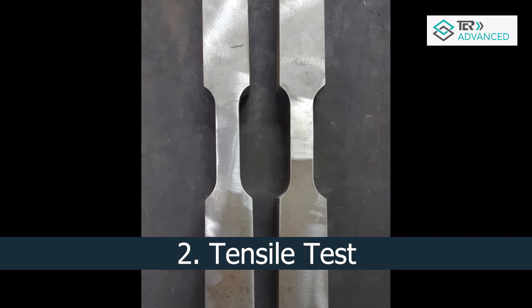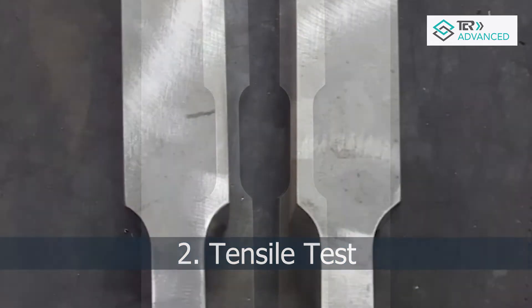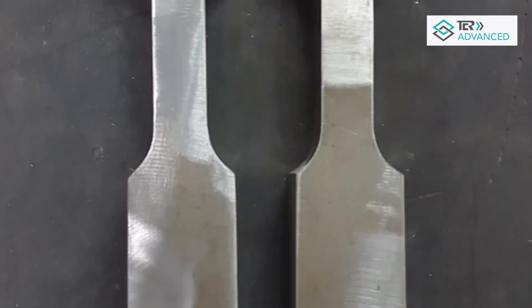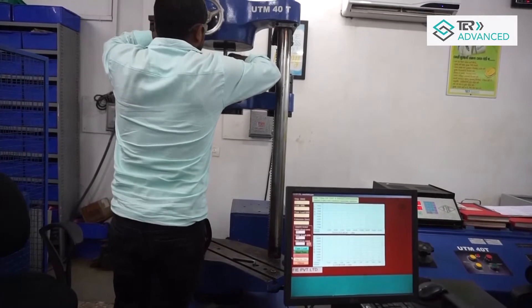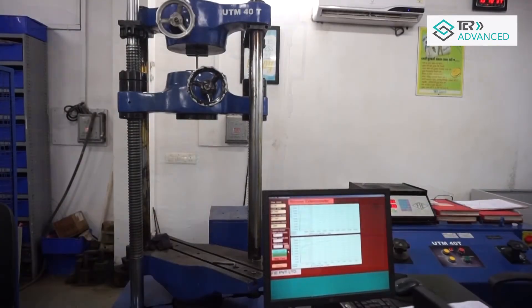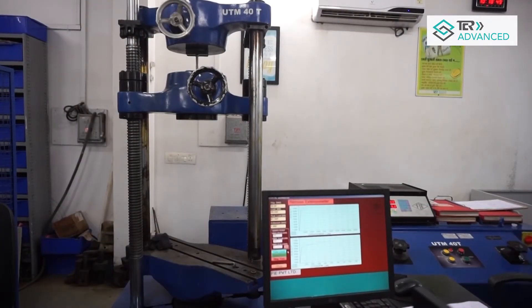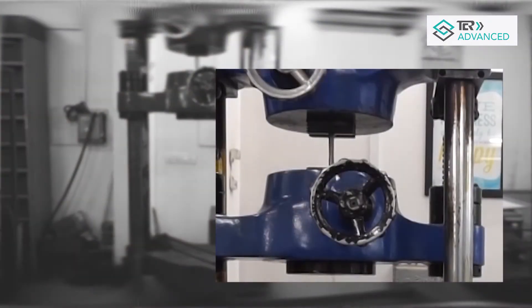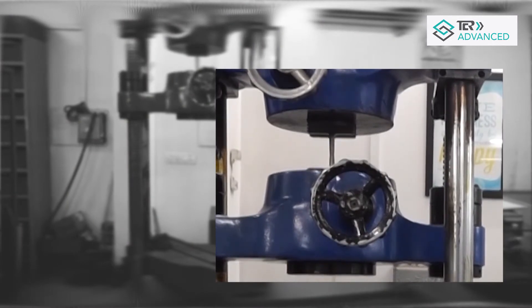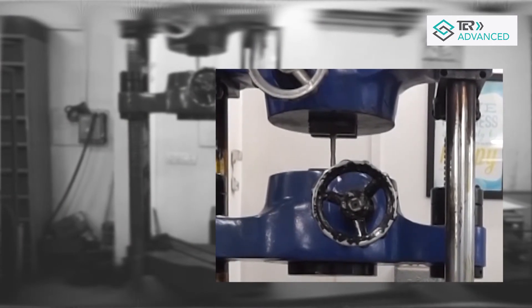Number 2: Tensile test. A sample is taken, which is placed in the machine that pulls apart the material until failure is caused. Force and displacement are measured, providing us with the stress-strain curve.